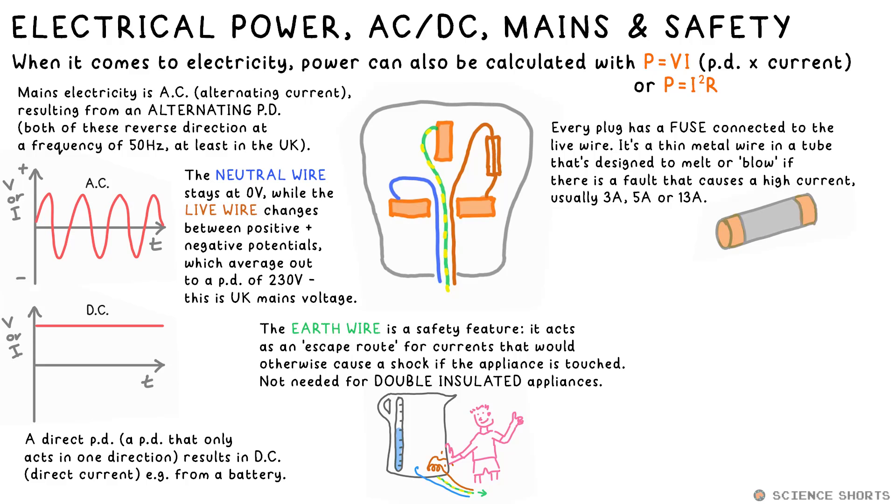Also in a plug, we have a fuse that's attached to the live wire, and is designed to melt or blow if the current exceeds a certain number of amps, usually 3, 5 or 13 amps. If something goes wrong in an appliance, the current may well spike, so the fuse will blow before too much damage can be done to it or the user. You might need to use P equals VI to calculate the normal operating current for an appliance to deduce what fuse should be used in the plug.